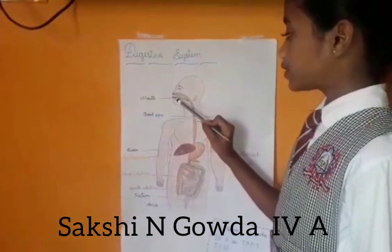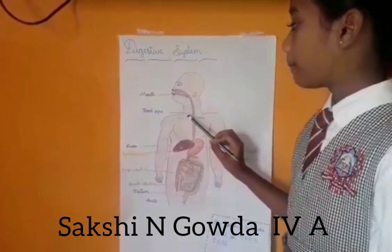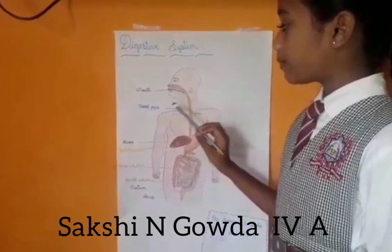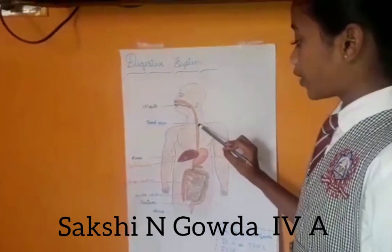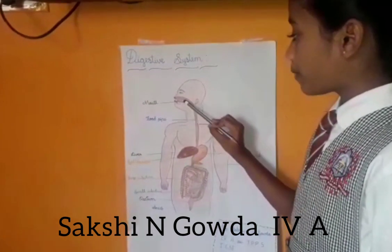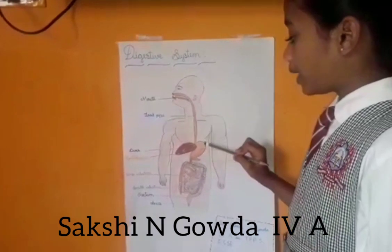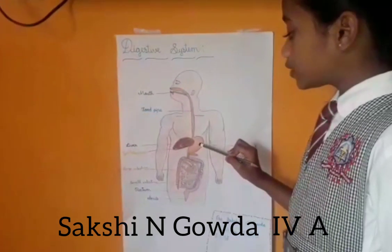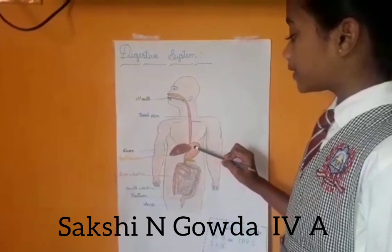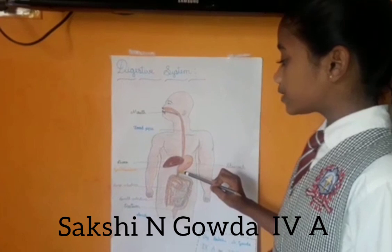Mouth: The digestion process starts in the mouth and the food is chewed well inside the mouth. Food pipe or esophagus: Food from the mouth passes to the stomach by the food pipe. Inside the stomach, the food is broken down into further smaller pieces by churning.